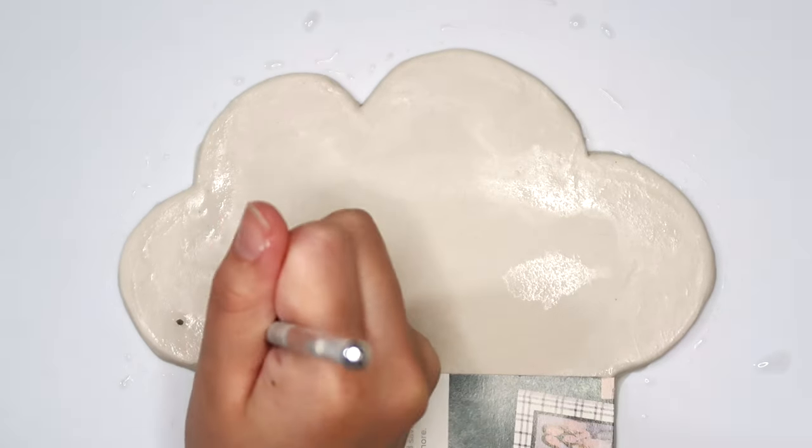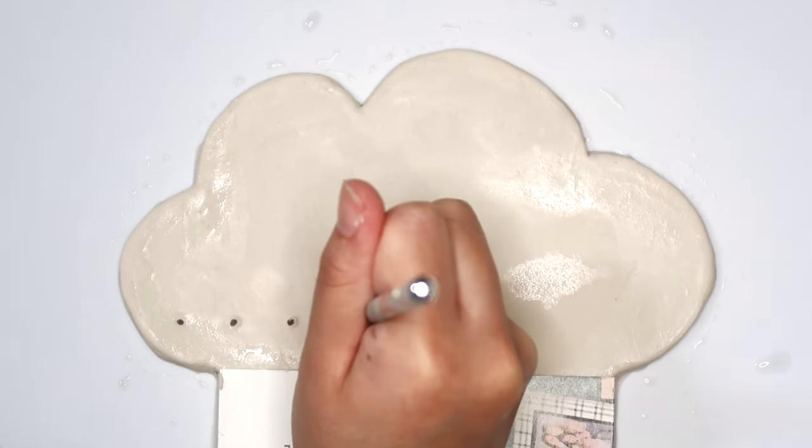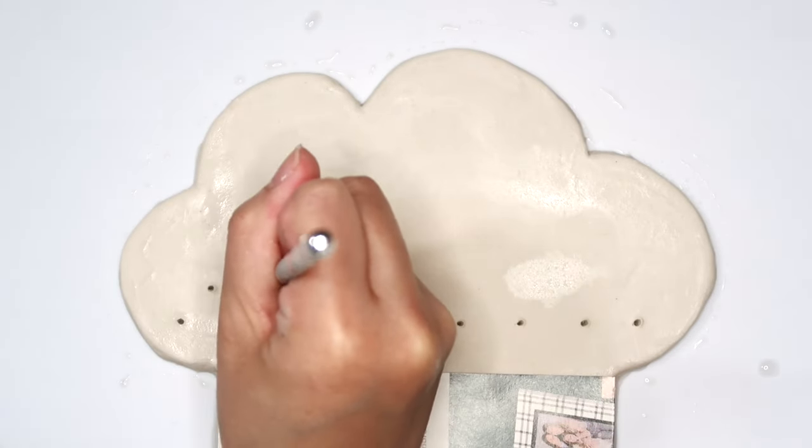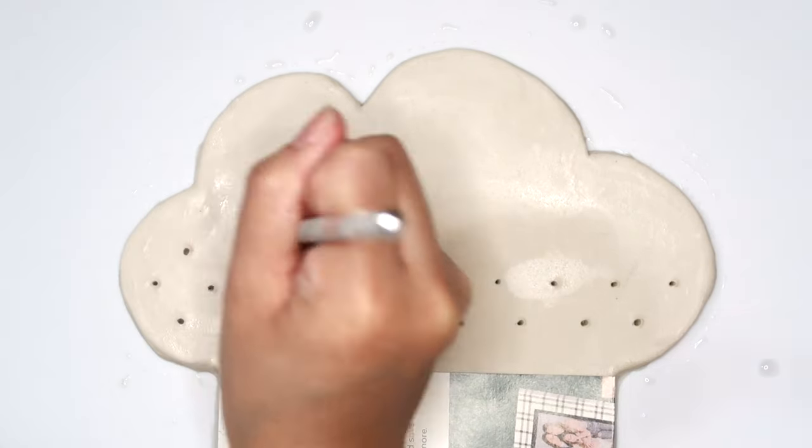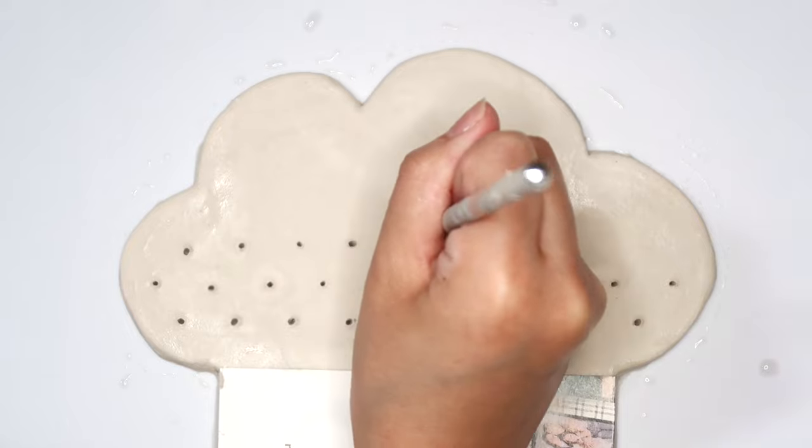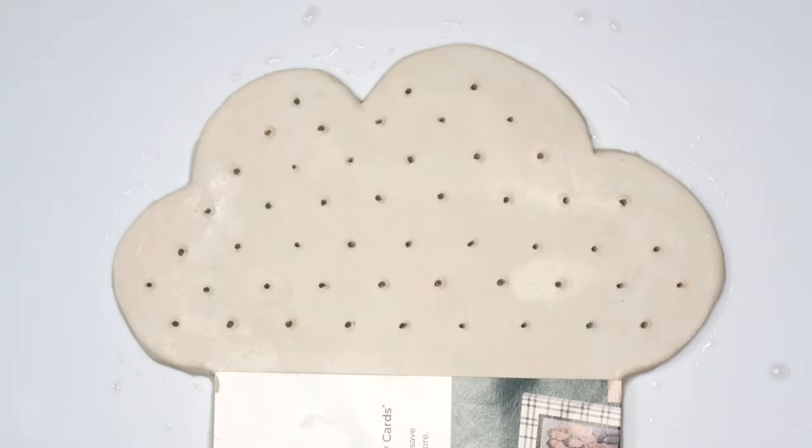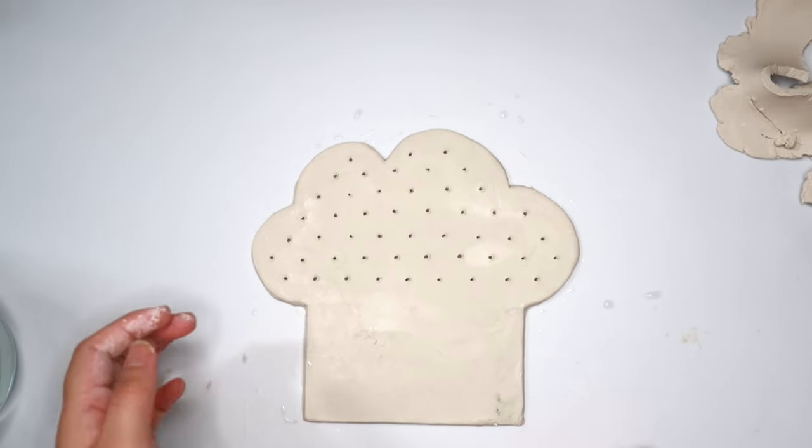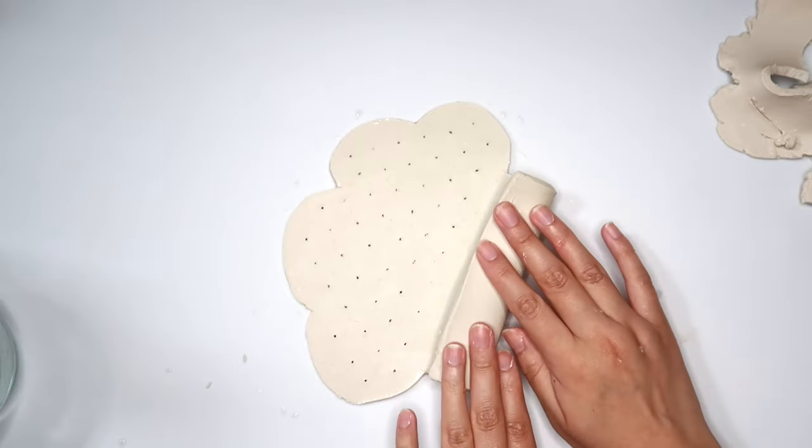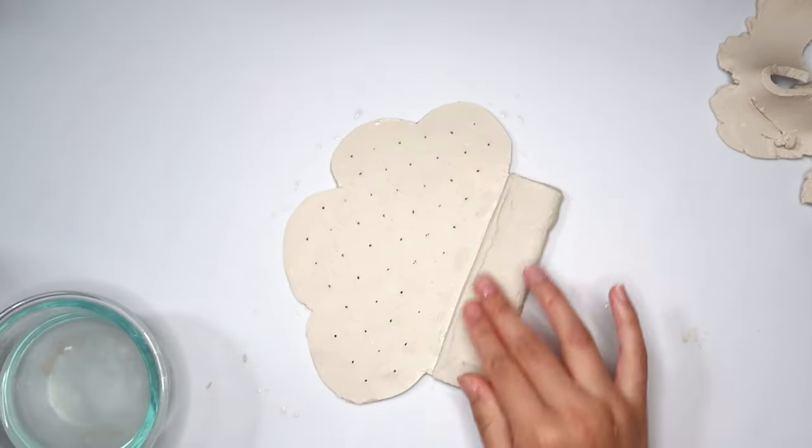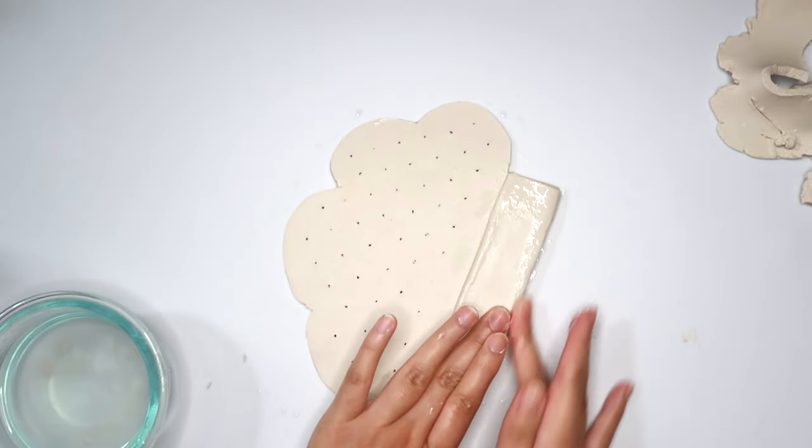Using my needle tool, I'm going to poke holes all over the cloud, and this is where we're going to be able to hang our earrings through. I took off that rectangular piece of paper, and then I flipped the cloud over to the back. Now I'm just going to fold that rectangular part on the bottom to make it twice as thick so that this has more weight on the front of it so that this cloud can stand up.